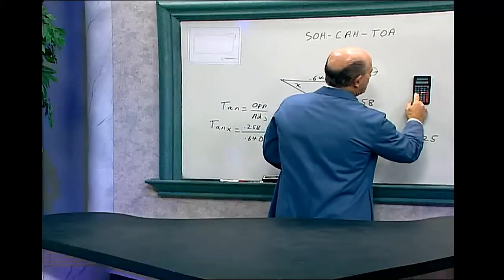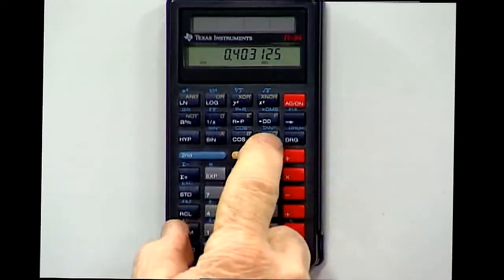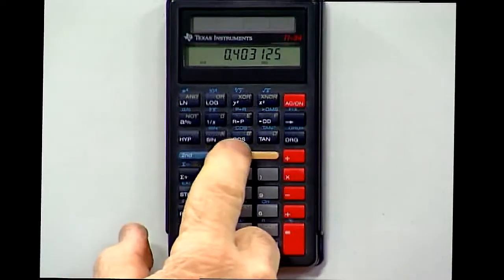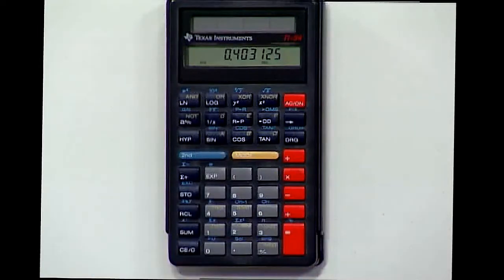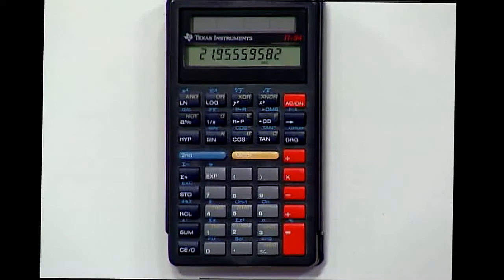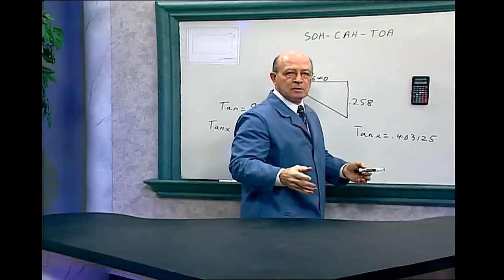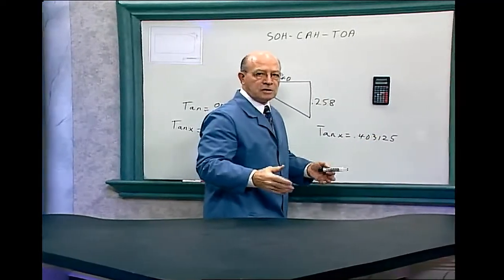Now we've got to use the invert button and it says second on it. Second. And remember to press tangent, not sine, cosine, but remember this is tangent, so make sure you press the right button. Tangent and that equals 21.9555 but we want to convert that decimal degree into degrees, minutes, and seconds if there are any seconds.